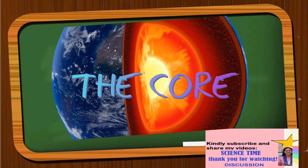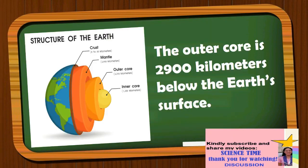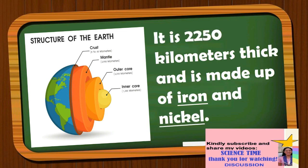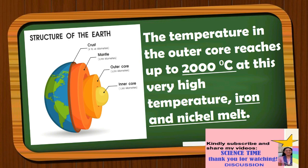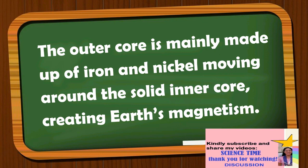The core is subdivided into two layers: the inner and the outer core. The outer core is 2,900 kilometers below the Earth's surface, is 2,250 kilometers thick, and is made up of iron and nickel. The temperature in the outer core reaches up to 2,000 degrees Celsius, at which iron and nickel melt. The Earth's magnetic field strengthens the idea that the outer core is molten liquid, with iron and nickel moving around the solid inner core and creating Earth's magnetism.